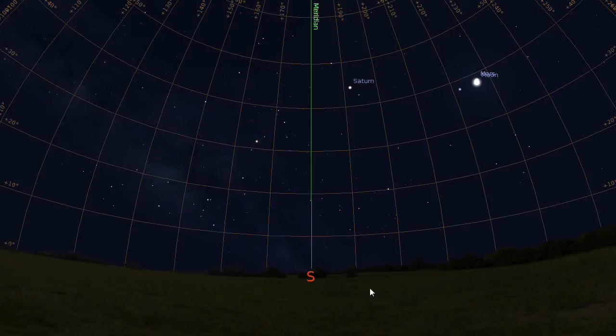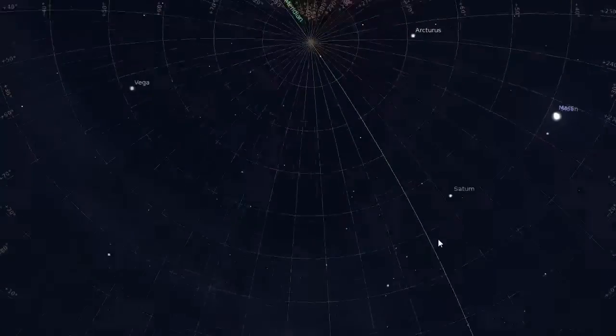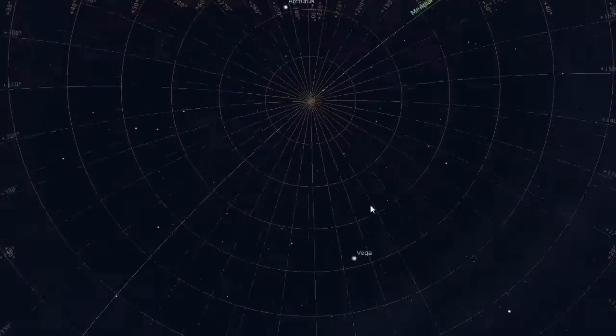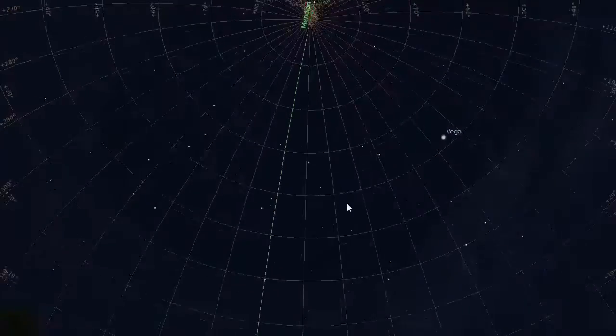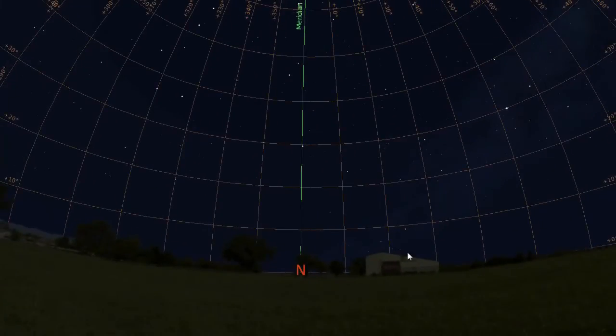The meridian. The local meridian is another imaginary great circle on the celestial sphere that is perpendicular to the local horizon.